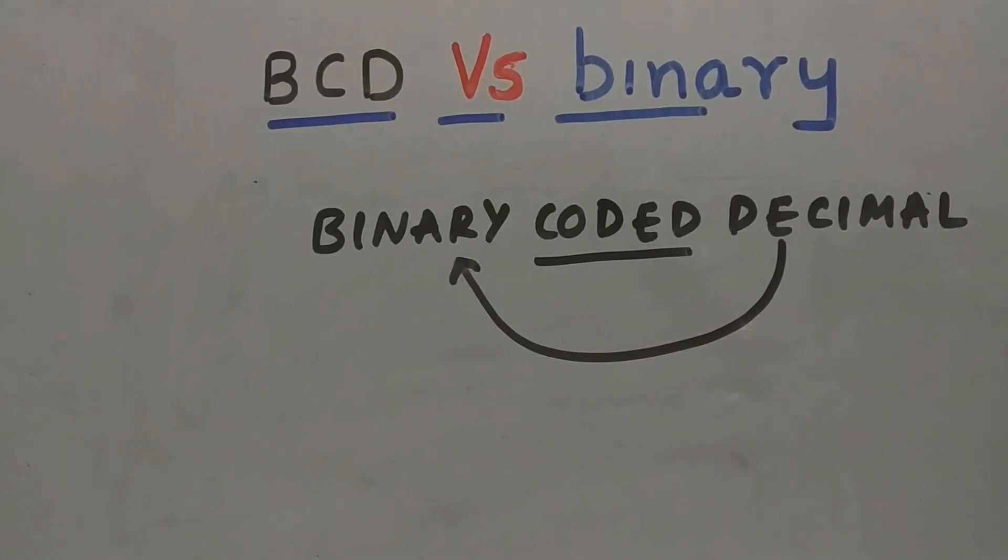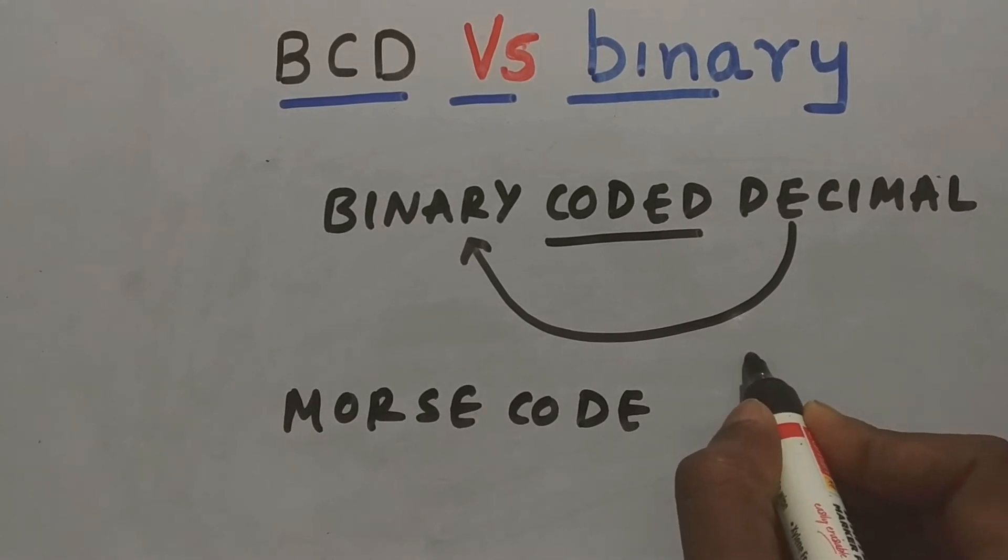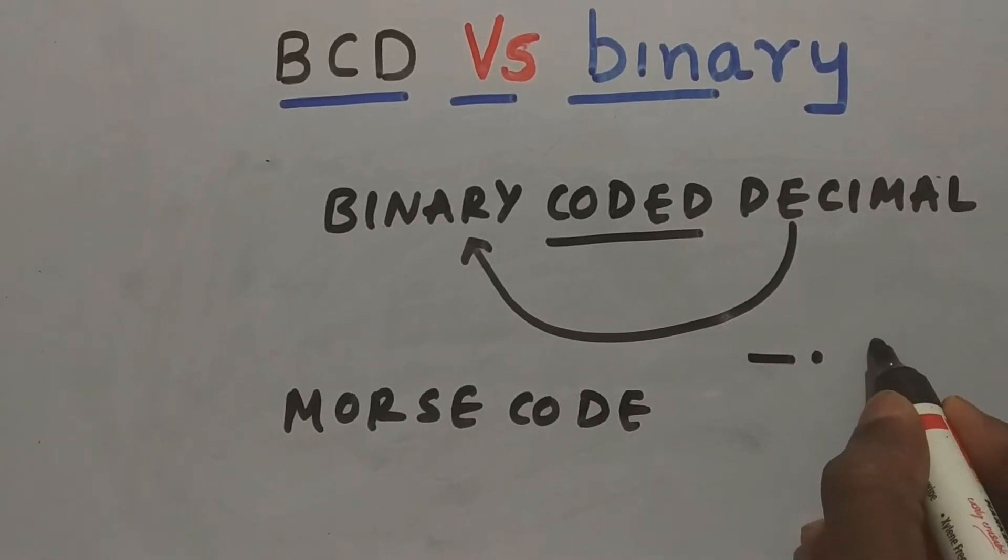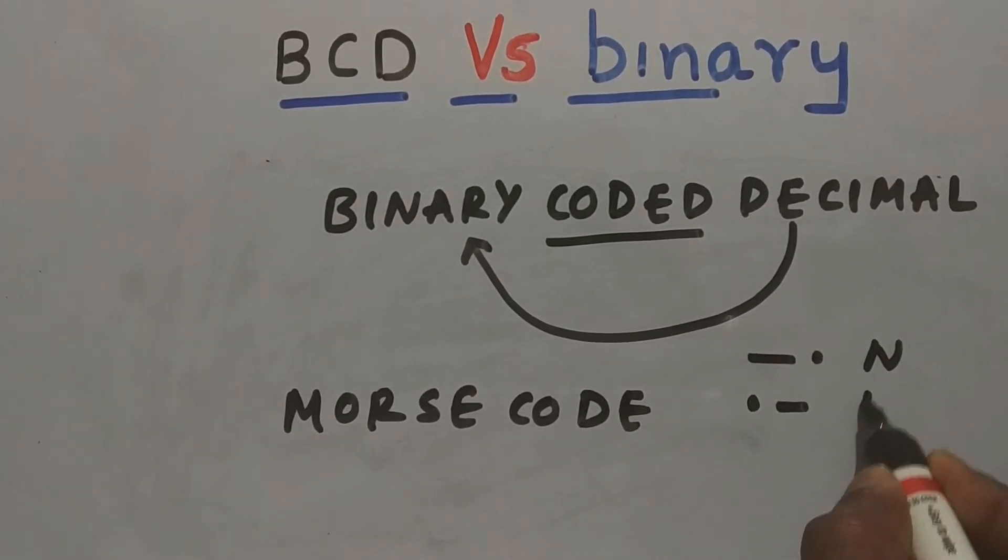To understand this better, let us consider an example as Morse code. In Morse code, we have a series of dashes and dots to represent alphabets. For example, a dash and dot is represented as alphabet N. And dot and dash is represented as alphabet A.